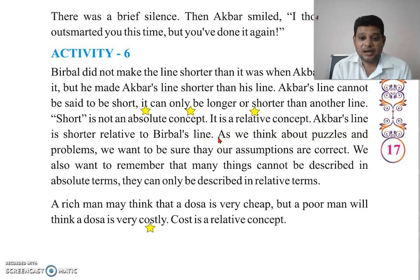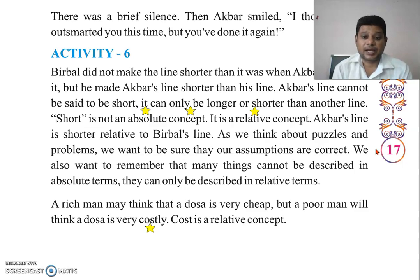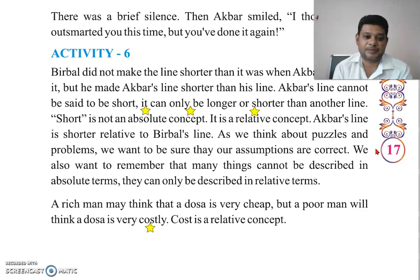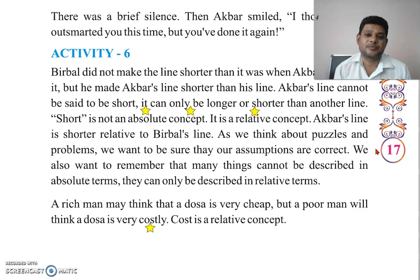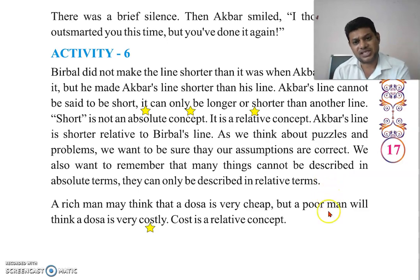As we think about puzzles and problems, we want to be sure that our assumptions are correct — हमारा अनुमान हमेशा correct होना चाहिए। We also want to remember that many things cannot be described in absolute terms — they can only be described in relative terms. बहुत सारी ऐसी चीज़ें होती हैं जिन्हें हम absolutely describe नहीं कर सकते — उन्हें हम relatively describe करते हैं। यहाँ दो examples दिए गए हैं।